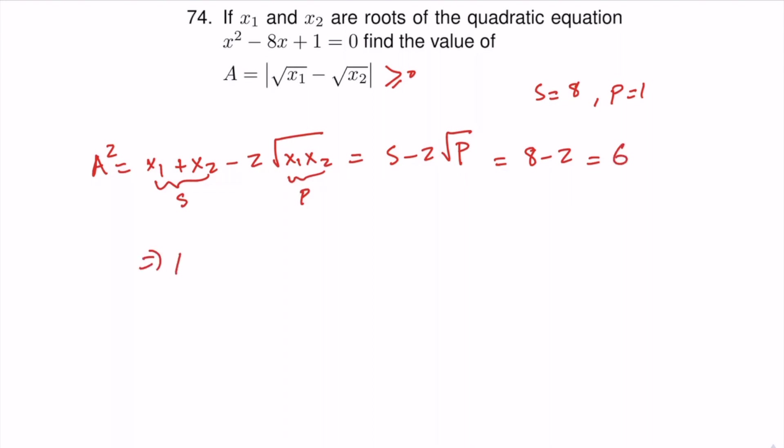And therefore, A will be, if we take the square root, it will be plus or minus square root of 6. But because A is greater than or equal to zero, the negative sign is not acceptable. So A will be square root of 6.